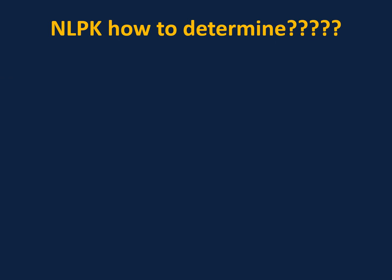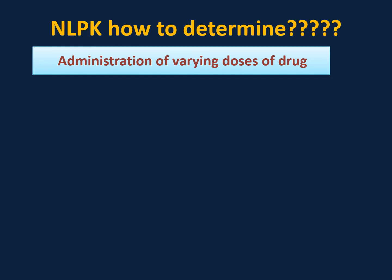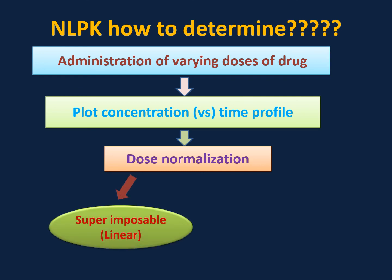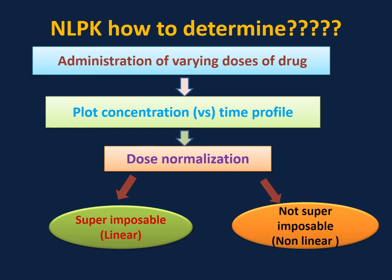To determine whether a drug follows linear or non-linear pharmacokinetics: first, administer the drug at different doses and determine the plasma concentration versus time profile, then do dose normalization. If the graphs are superimposable, it is linear pharmacokinetics. If the curves are not superimposable, it is called non-linear pharmacokinetics. This is called the principle of superposition, which is used to determine whether a drug follows linear or non-linear kinetics.